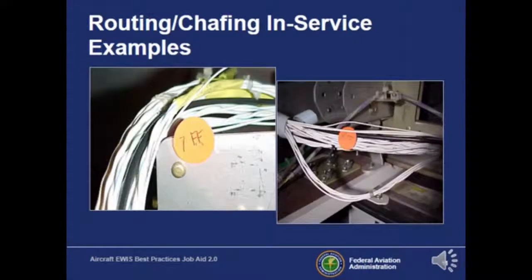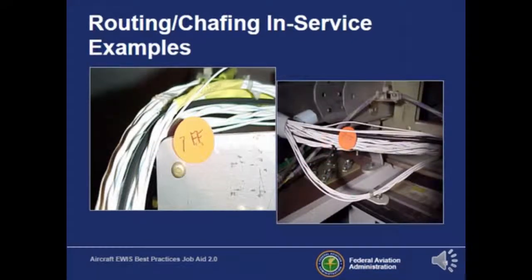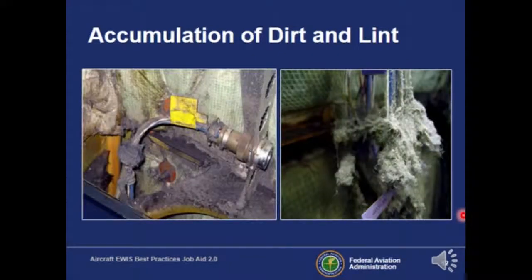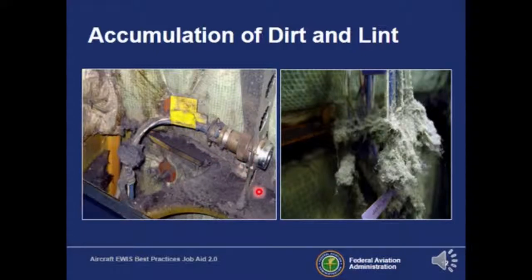The first thing people notice is routing and chafing. Wires need to be routed in such a way that they prevent any chafing opportunity — for example, chafing against the structure. In addition, you don't want dirt or lint on your wires, as this will prevent a good inspection and could cause contamination that might make the wire circuit malfunction. Please make sure you clean as you go, because it gets really nasty in certain areas.